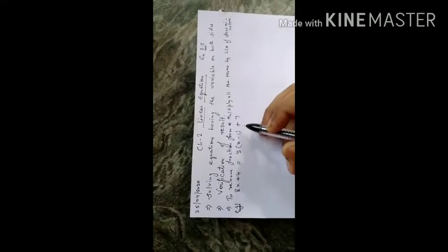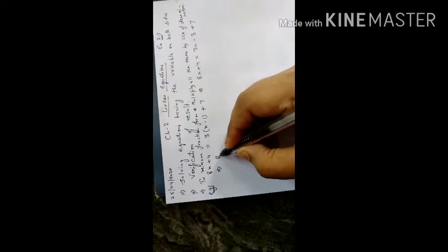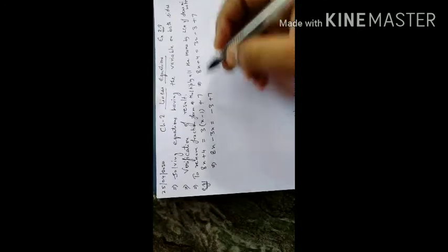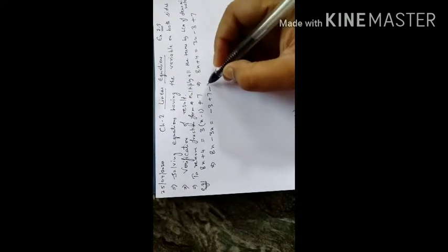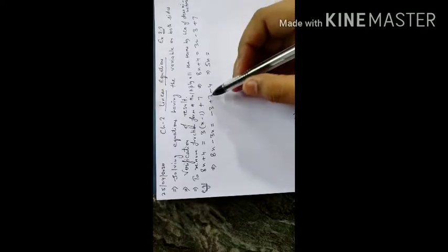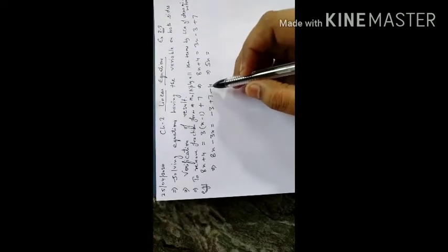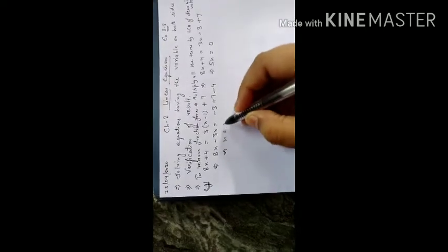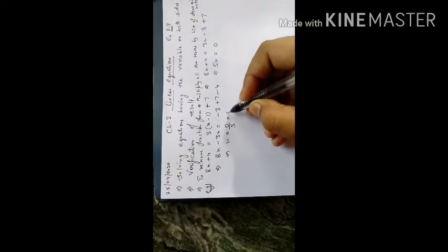The first question is: 8x plus 4 is equal to 3 bracket x minus 1 plus 7. First, we remove the bracket: 8x plus 4 is equal to 3x minus 3 plus 7. Transposing variables to one side and constants to the other: 8x minus 3x equals 7 minus 3 minus 4, giving 5x equals 0. So x is equal to 0 upon 5, which is 0.